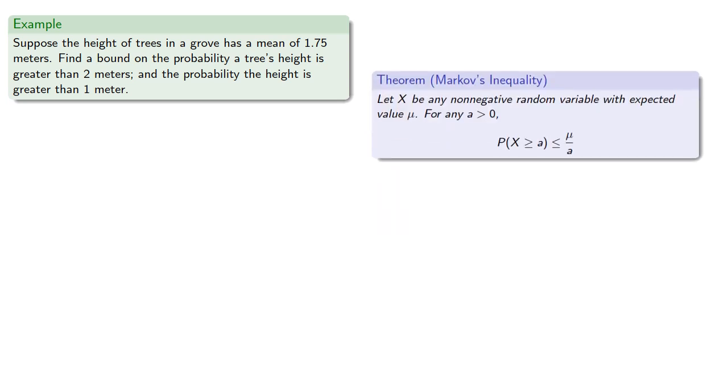So Markov's inequality says the probability that our non-negative random variable is greater than or equal to any amount is less than or equal to the mean divided by the amount. And so the probability that X is greater than or equal to 2 is less than or equal to the mean 1.75 divided by 2. And this is a useful result.